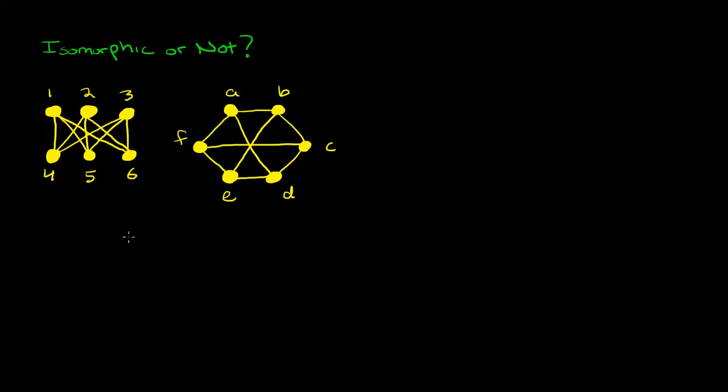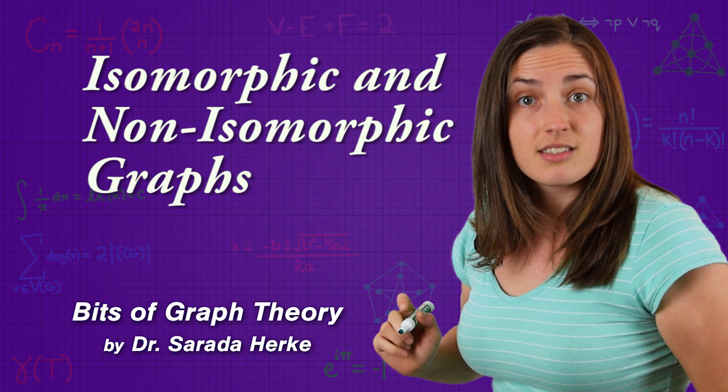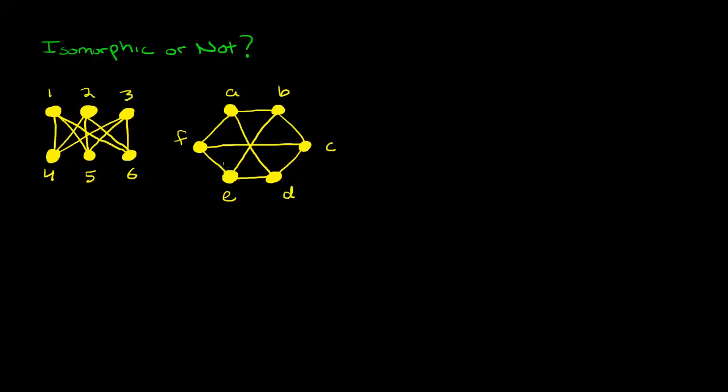In this video, we'll discuss how to determine if two graphs are isomorphic or not. Let's take a look at these two graphs as our first example. If we want to determine whether or not these are isomorphic, before we blindly go and try to find an isomorphism, there's a couple of basic checks that we can perform.